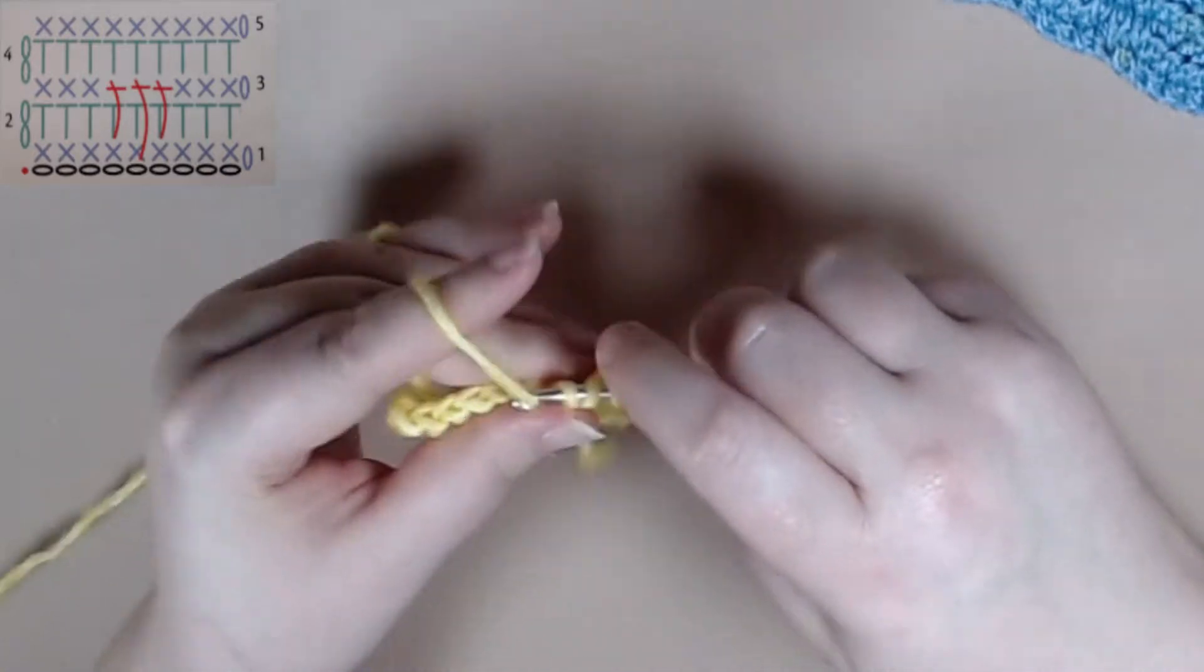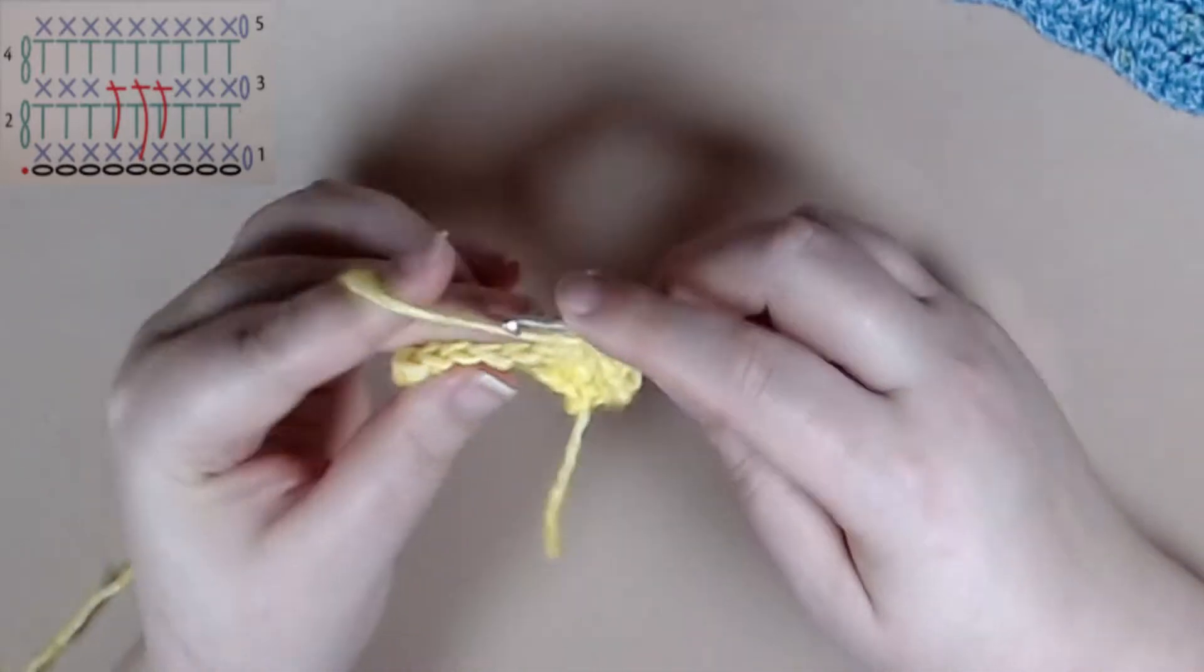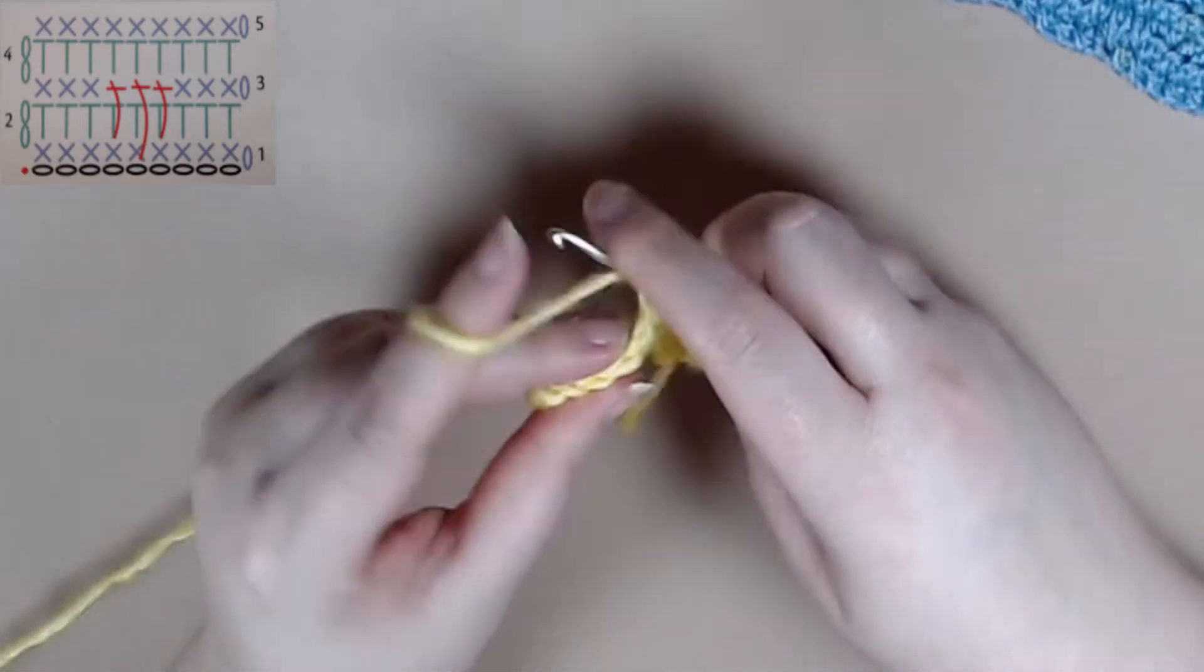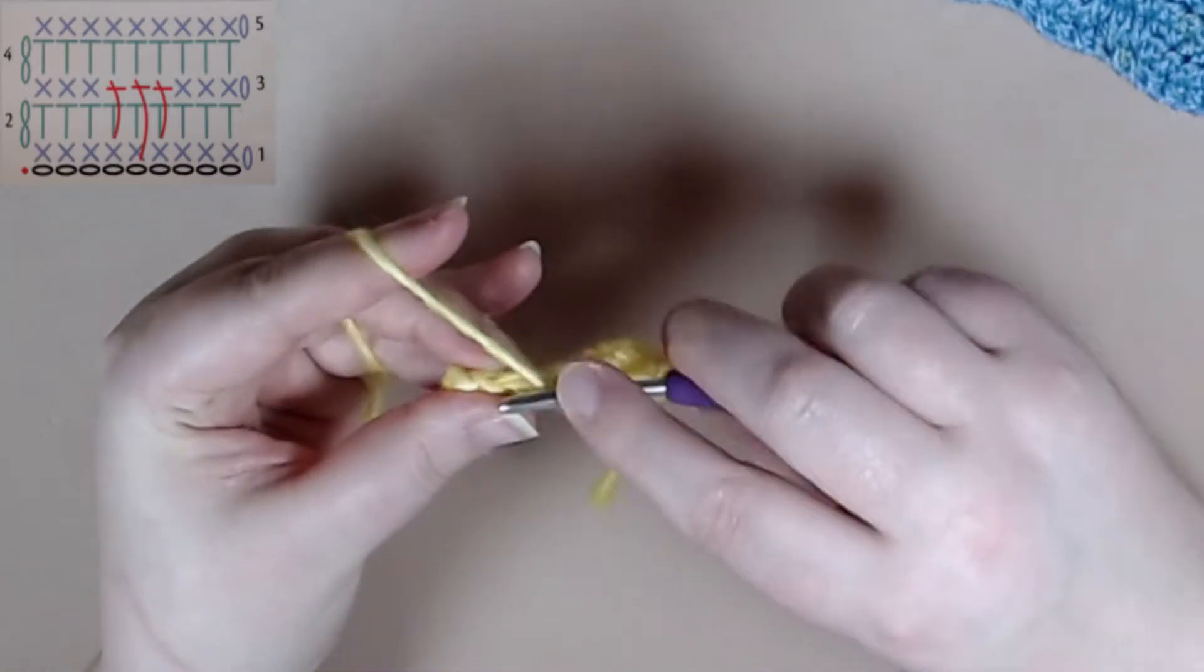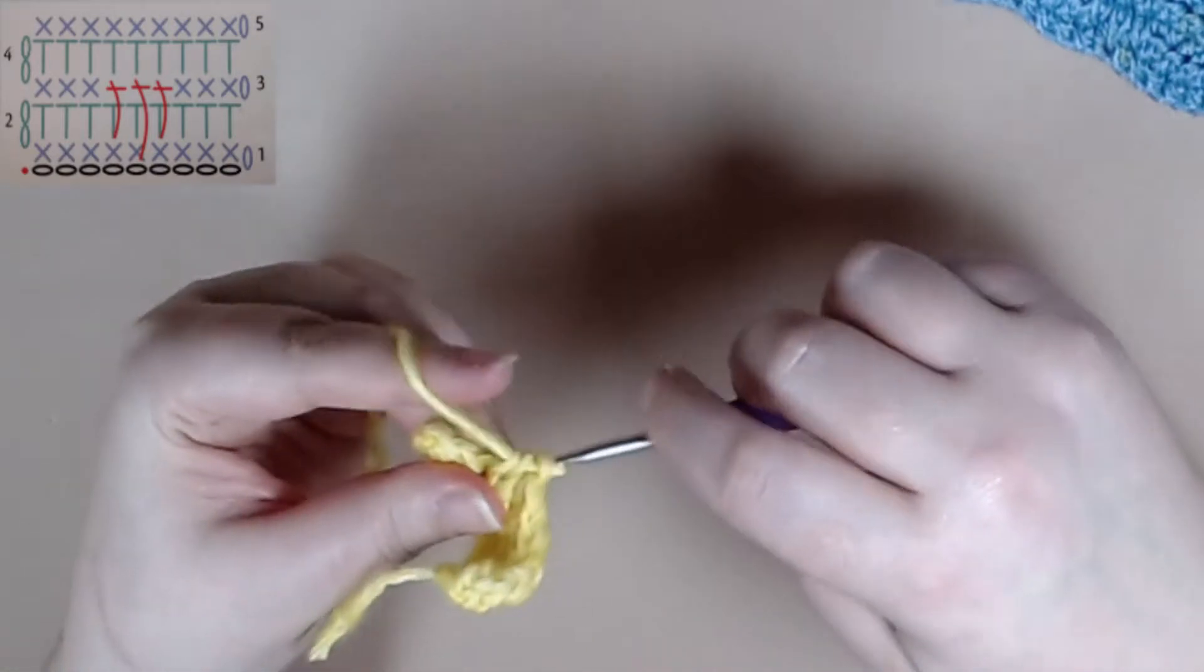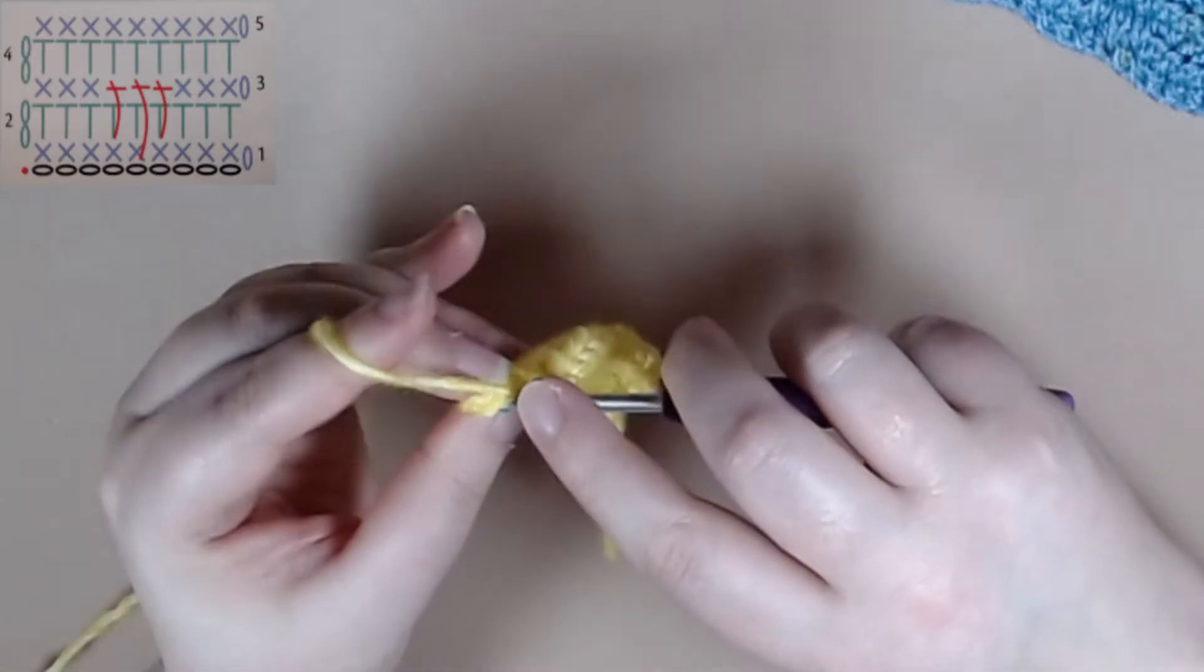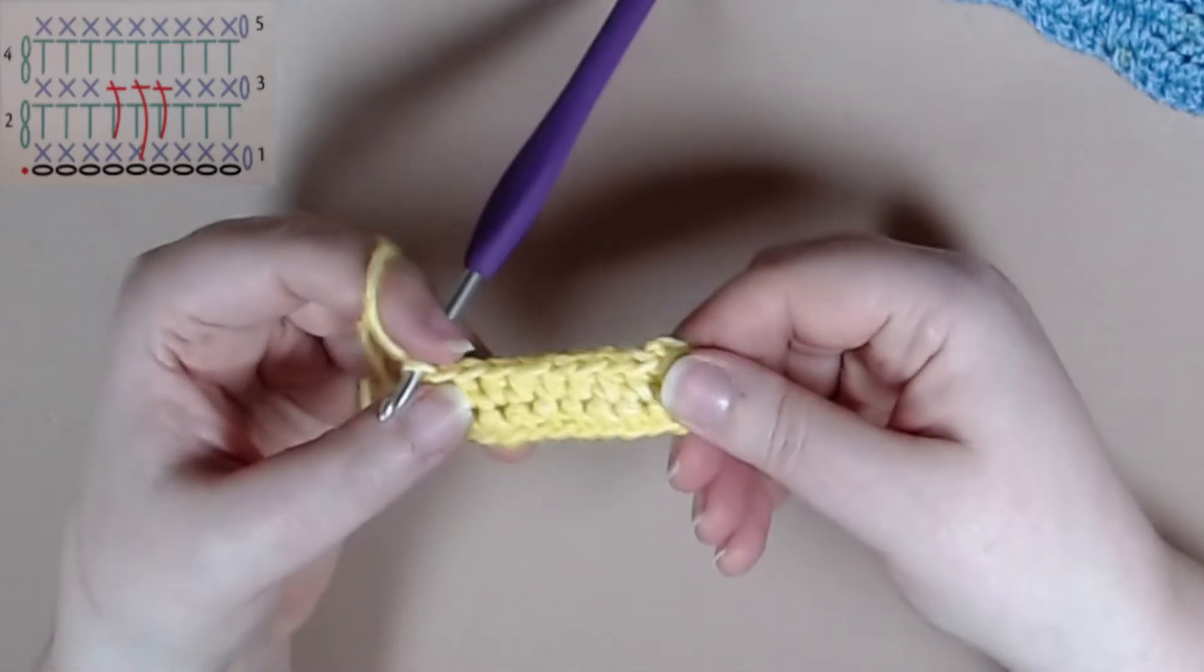And Row 2 is the beginning of your repeat so when you're doing this project you will want to repeat rows 2 through 5 to get your desired size for this project. There you are, Row 2.